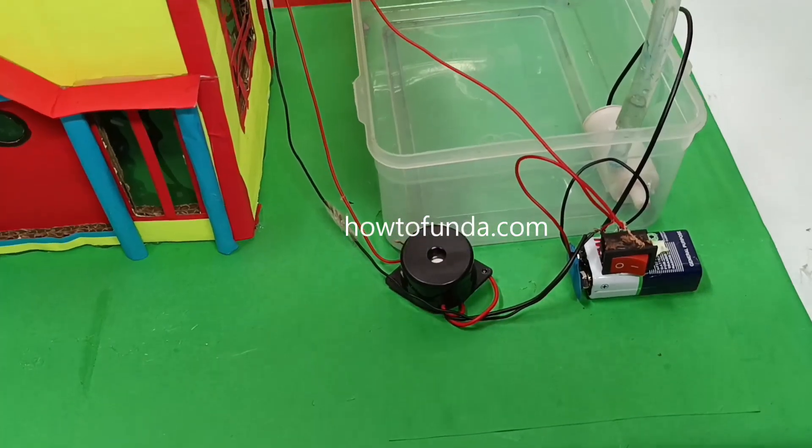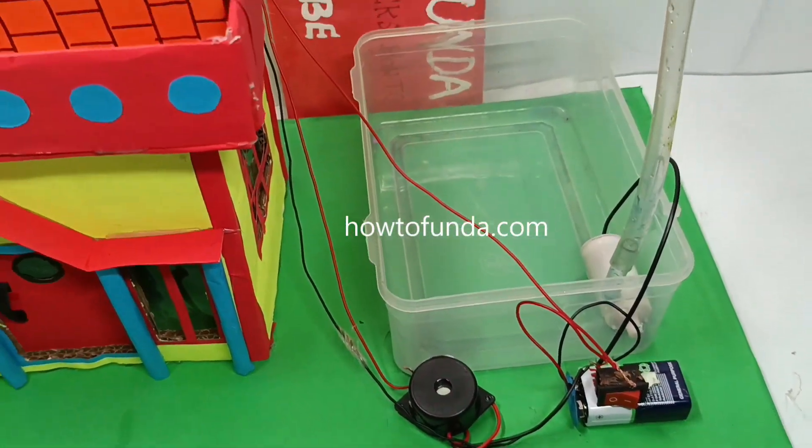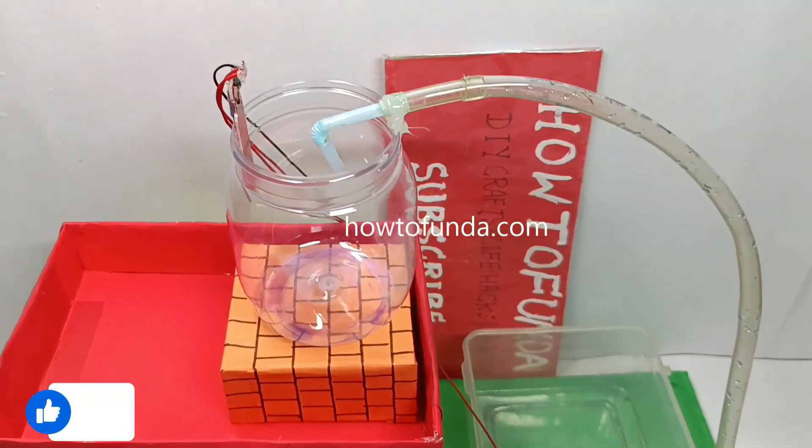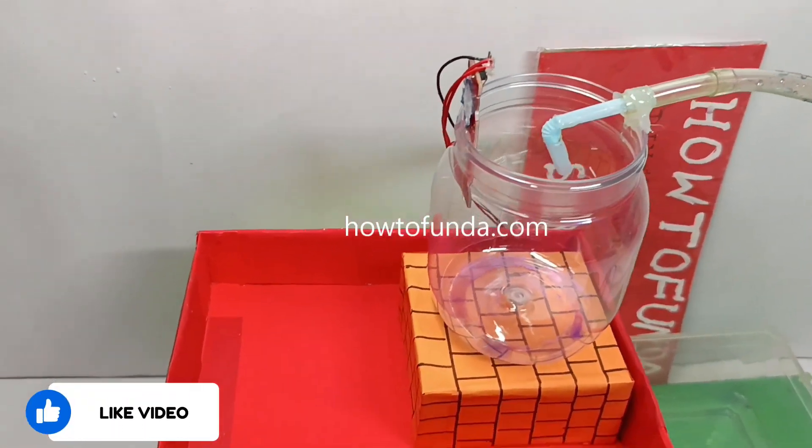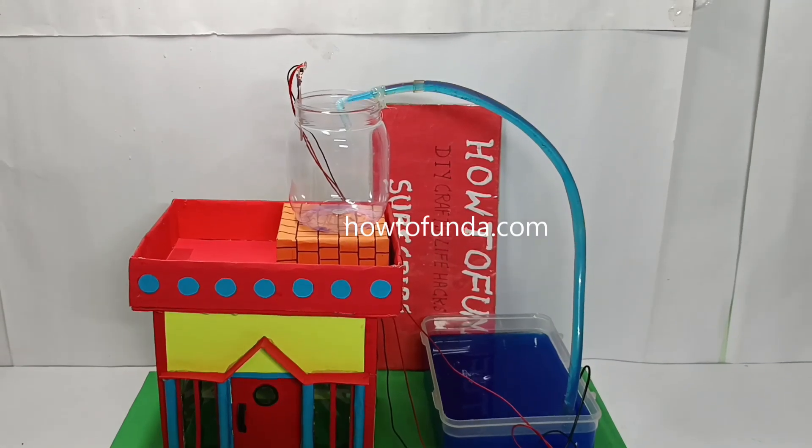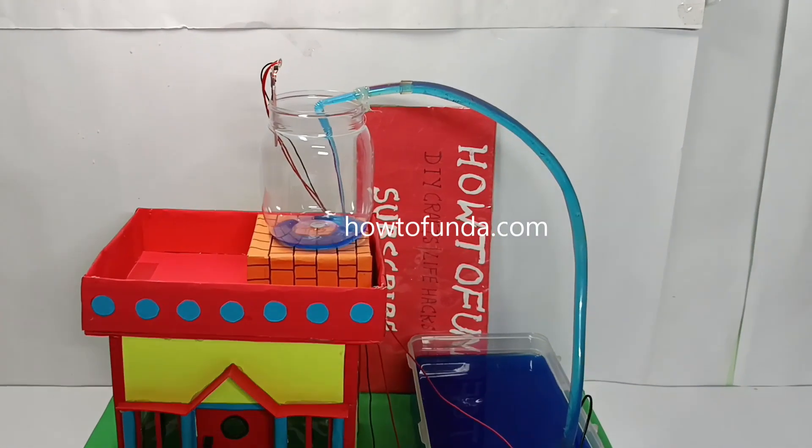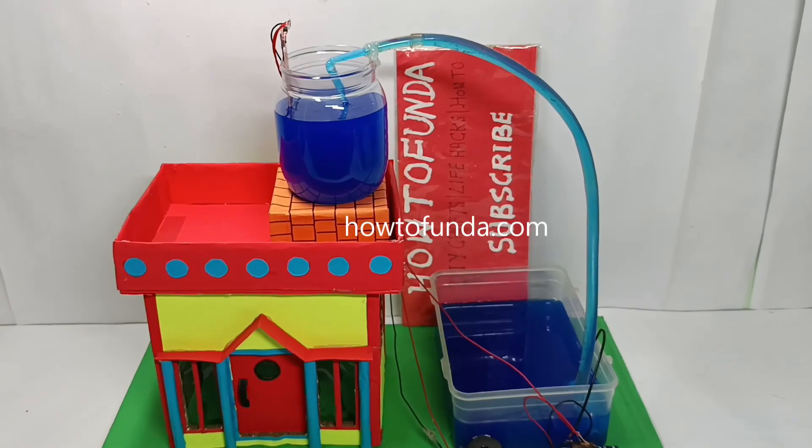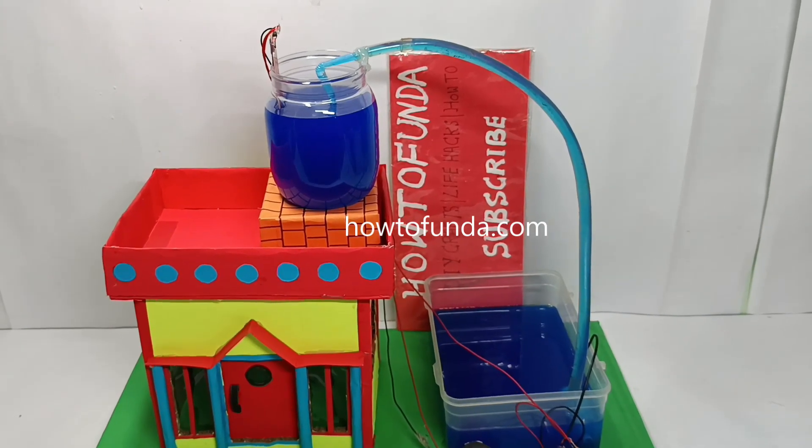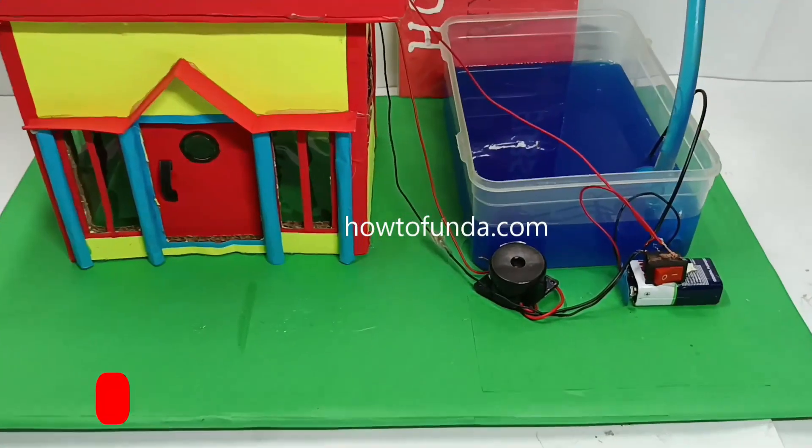Now we will demonstrate how this working model really works practically. We have switched on the DC motor pump. Now we are seeing the water getting full on top of the water tank. When the water is getting full, you can see it is reaching the level where we have kept the sensor.